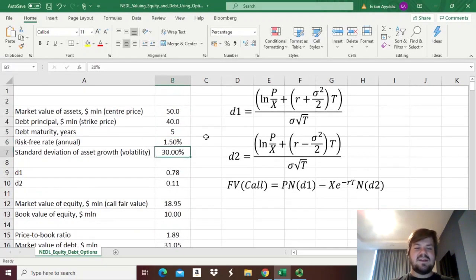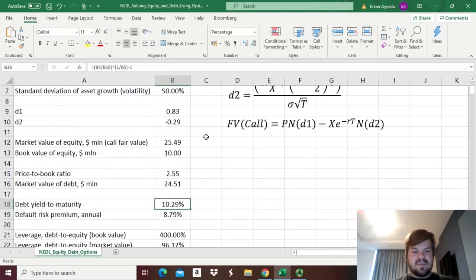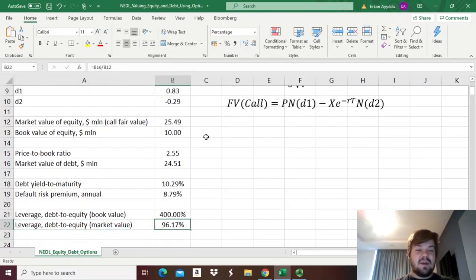Alternatively, let's see what would happen if the standard deviation of asset growth, so our volatility, in terms of the Black-Scholes model, will increase to something like 50%. We can see that both the price-to-book ratio and default risk premium skyrocket, and actually, interestingly, what happens to leverage is that actual leverage, if you measure it using market values, plummets below one, regardless of the fact that actual book value leverage stands at 100% still.